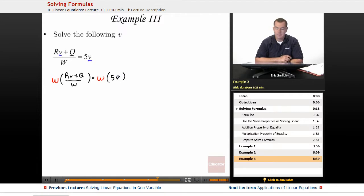Okay, over on the left side, those w's would take care of each other. I'd be left with rv plus q equals w times 5v.